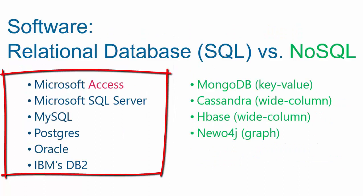Relational database software is so popular that there are several different vendors. Microsoft has Access at the low end and then Microsoft SQL Server, which has the ability to work with different technologies and has user-level security. Then there are open source products such as MySQL or Postgres, and then there are the big players that run the entire world, such as Oracle and IBM's DB2.